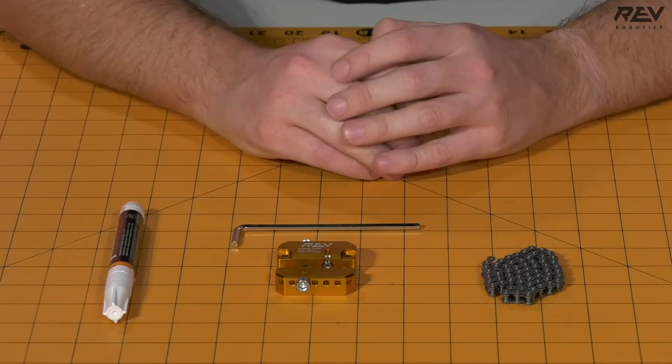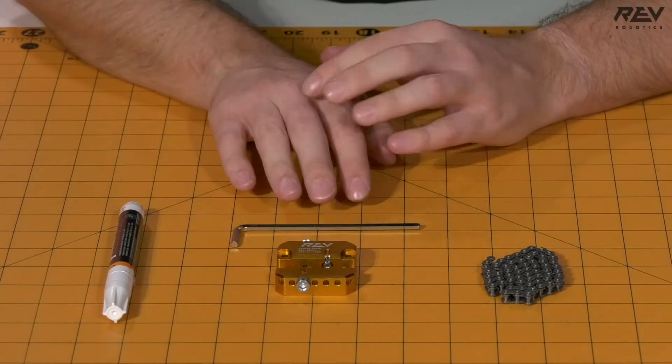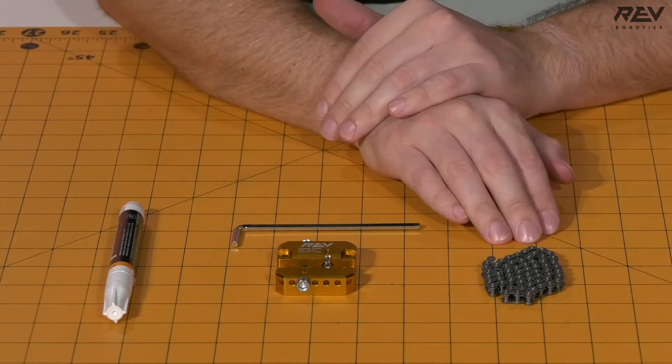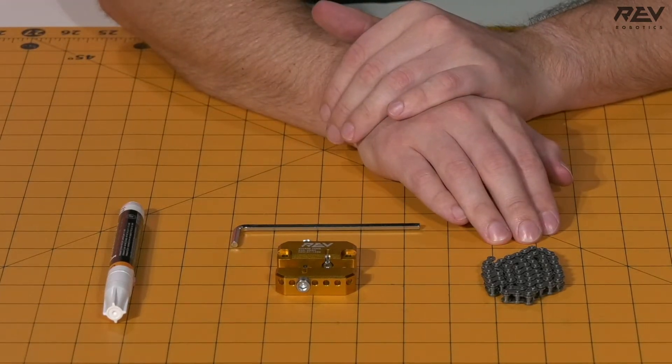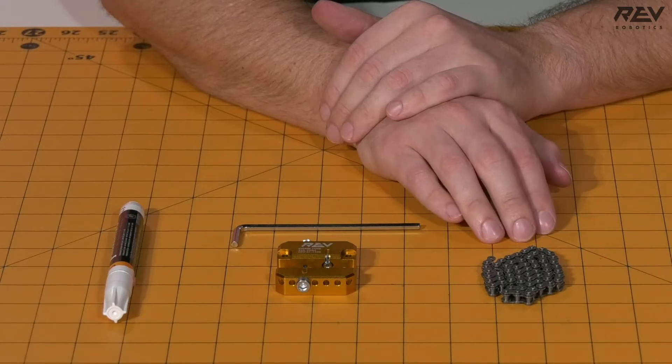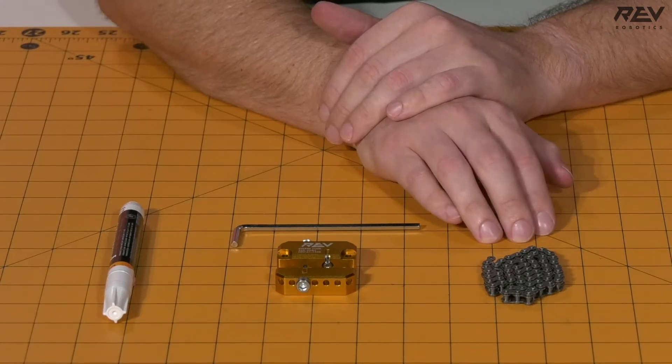We are making the chain links. For this step, you're going to need a chain tool, the included Allen key for the chain tool, and chain that is going to be longer than the length that you're going to be breaking. So for this segment,